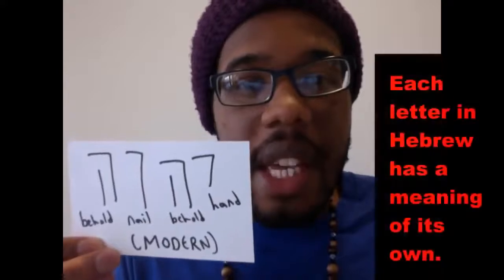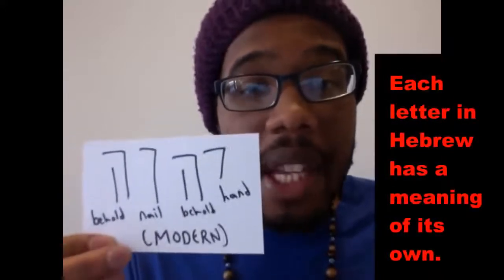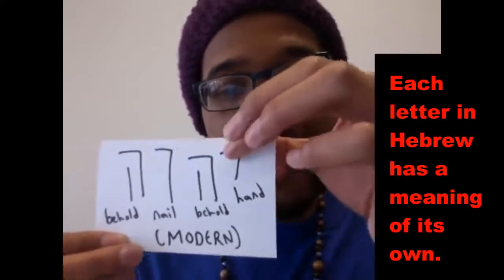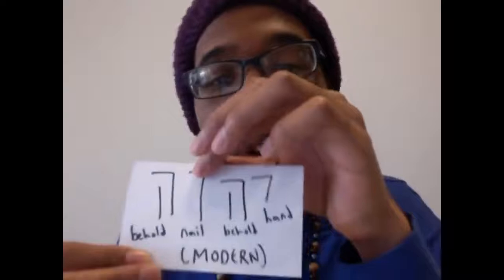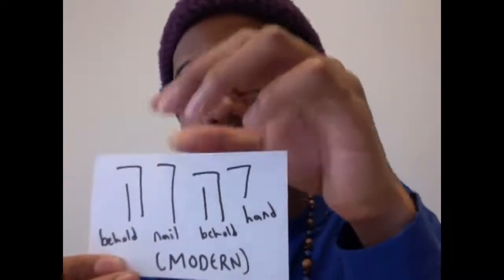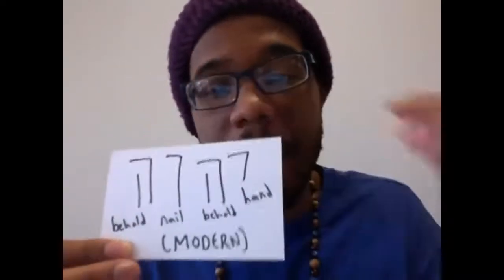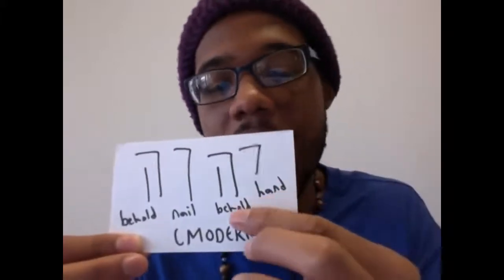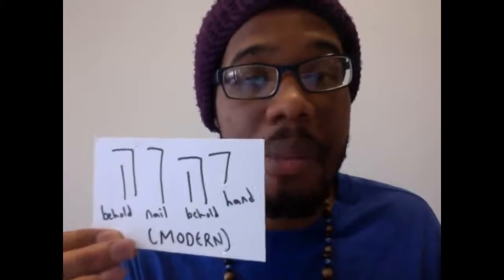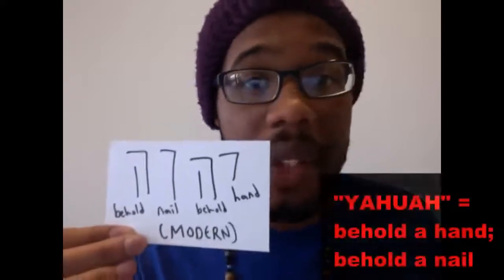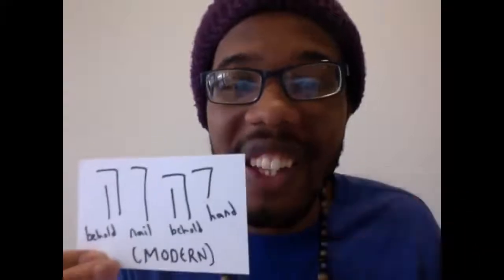Pictographically speaking, each specific letter in the name of our Father has a meaning of its own. The Yod means 'hand,' the Hey means 'behold,' the Vav or 'ooh' means 'nail,' and the final Hey means 'behold' again. So when you put it together, the name of our Father Yahuwah pictographically means: behold a hand, behold a nail.